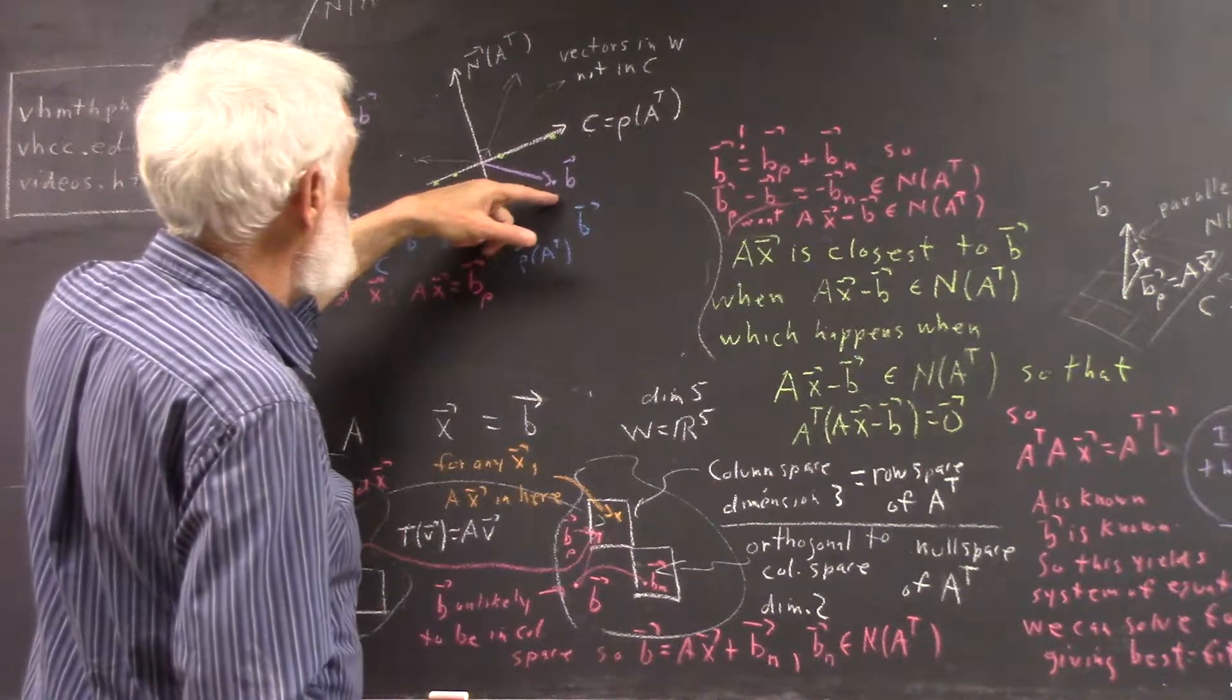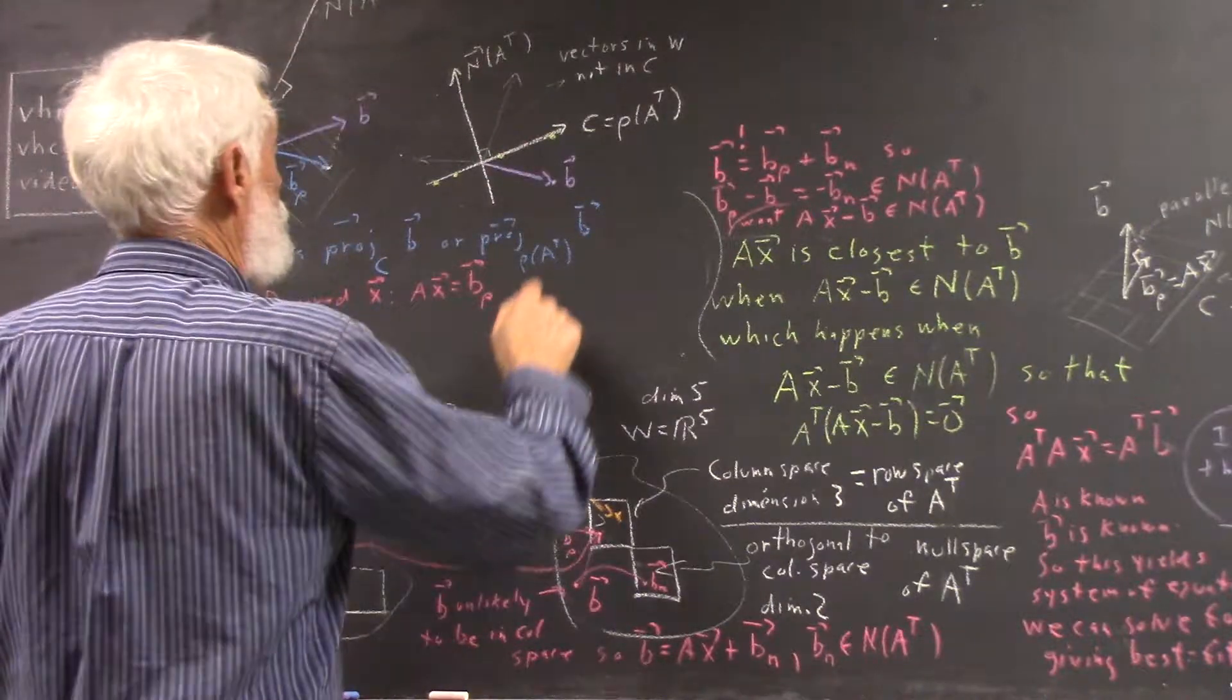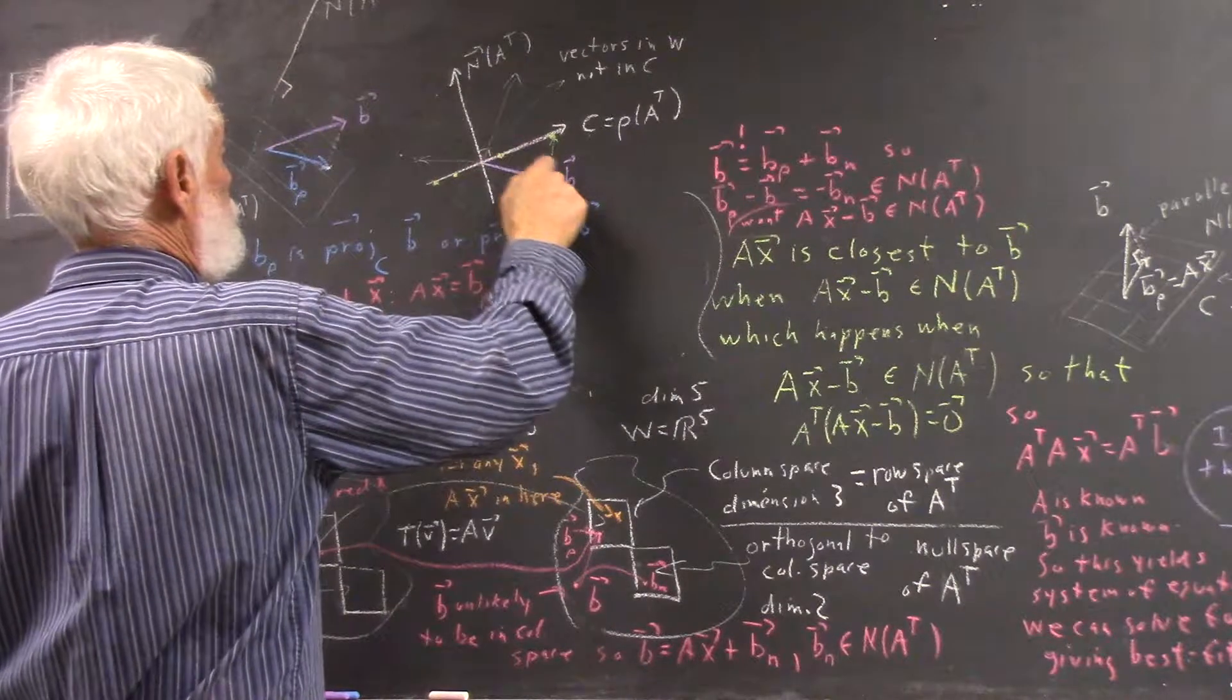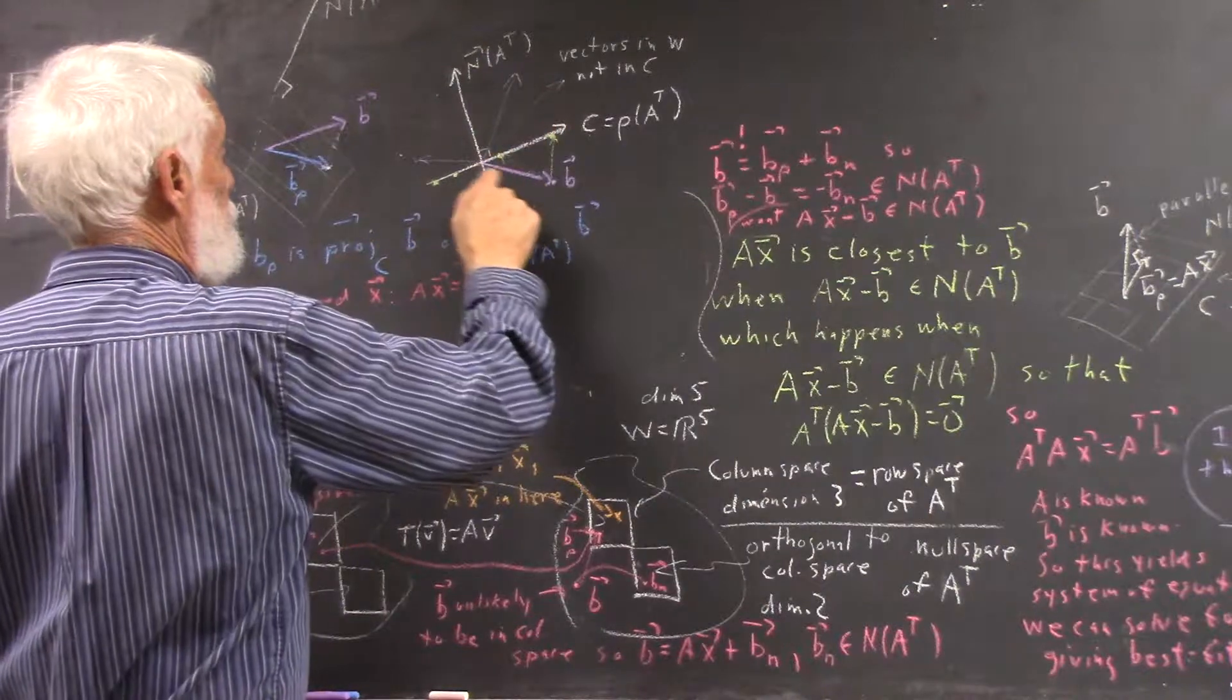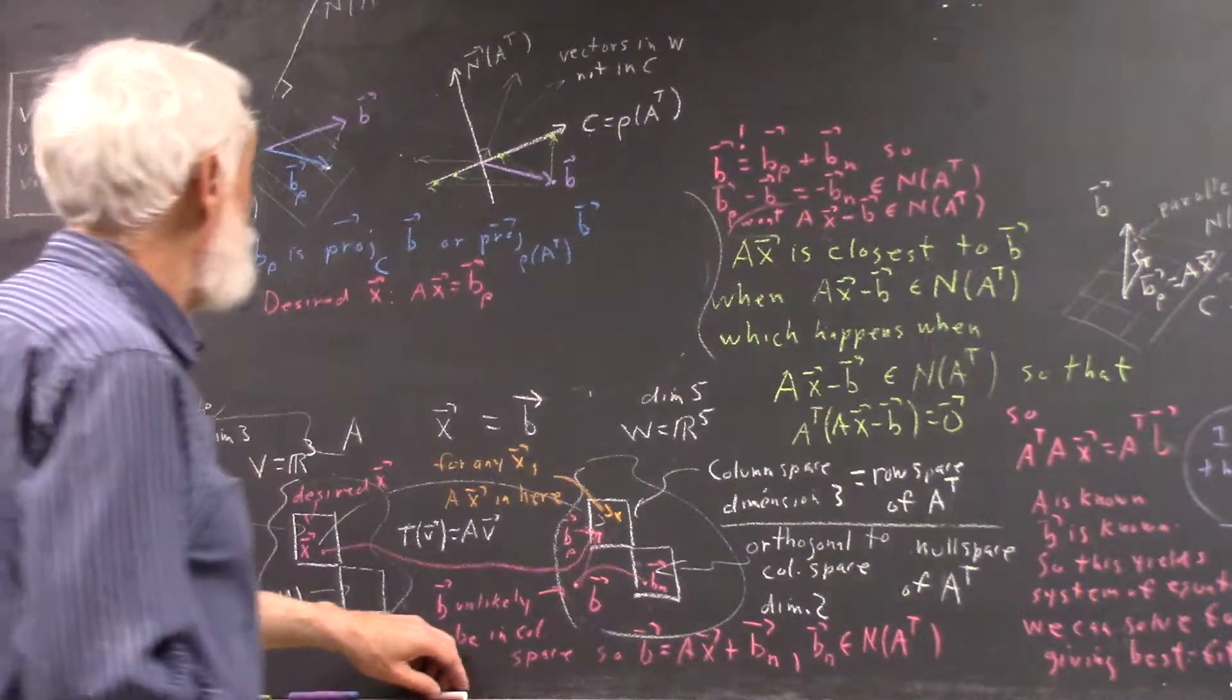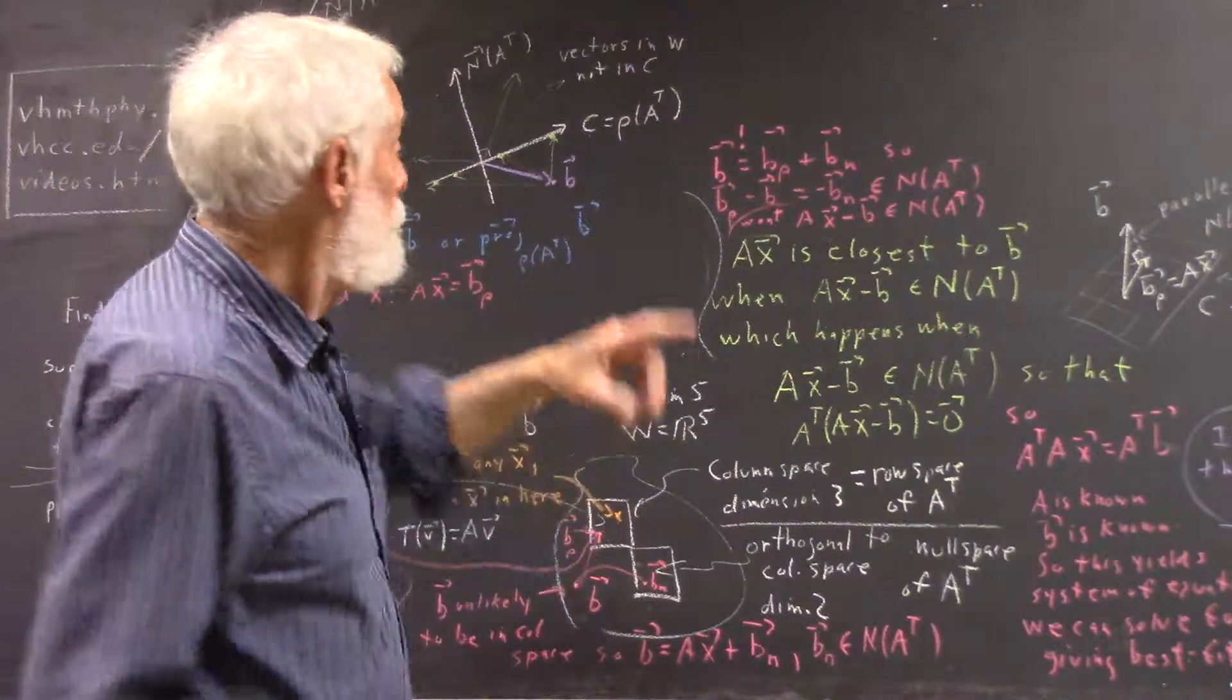How far is B from here? Well, it's going to be as far as the length of this vector. How far is it from here? Well, it's as far as the length of this vector. This looks like it may be a little further than this. And clearly over here, these vectors are even further.